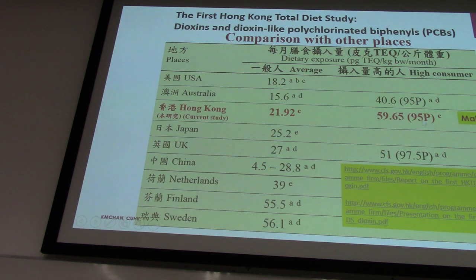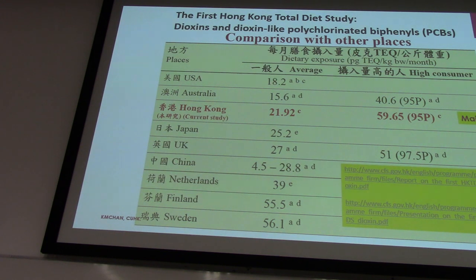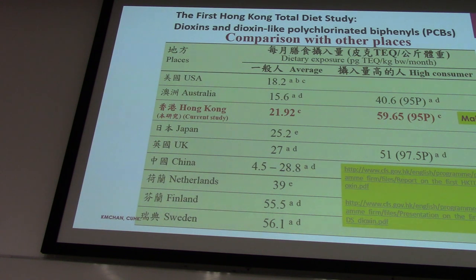But if you look at the high consumer — the top 5%, the seafood lovers and meat lovers — fish congee in the morning, sushi in the afternoon, more sushi at night — I would call those high consumers.